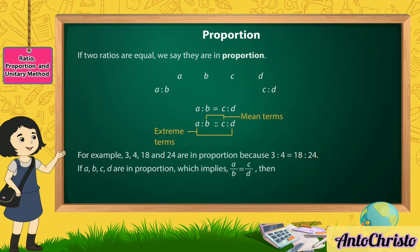So, if A, B, C, D are in proportion, which implies A by B is equal to C by D, then A multiplied by D is equal to B multiplied by C. That is, product of the extremes is equal to product of the means.